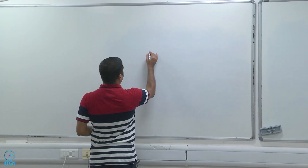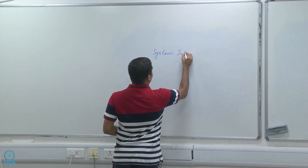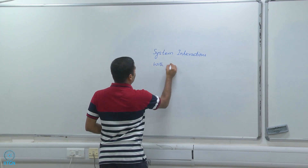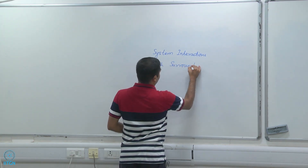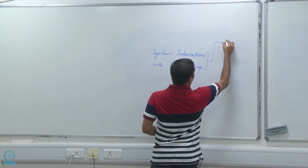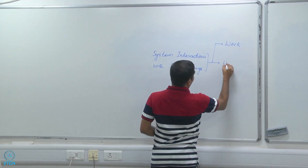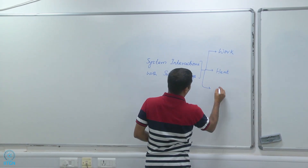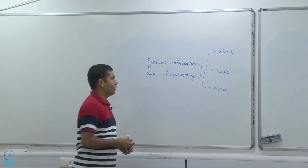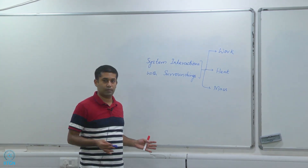Basically a system can have interactions of three basic types. One is a work interaction, the other is heat interaction, and the other is mass interaction. So a system can interact with its surroundings in three different ways: work, heat, and mass.